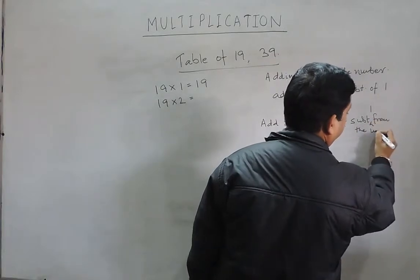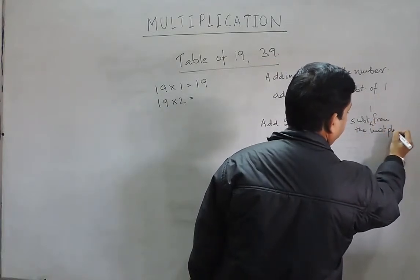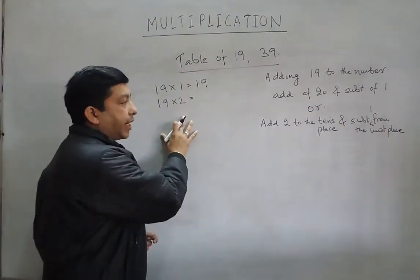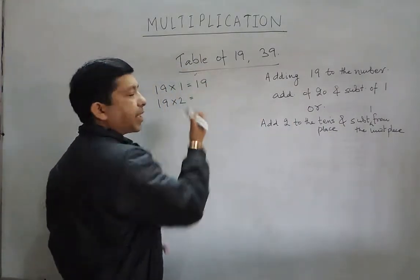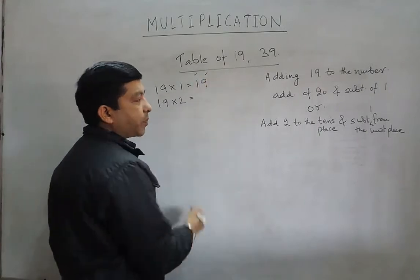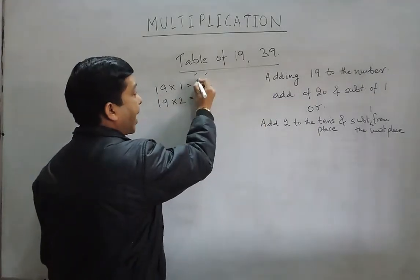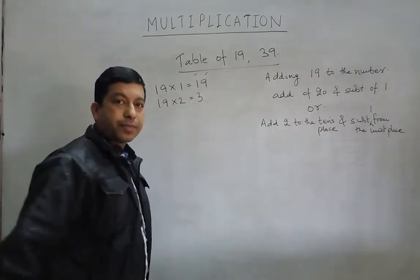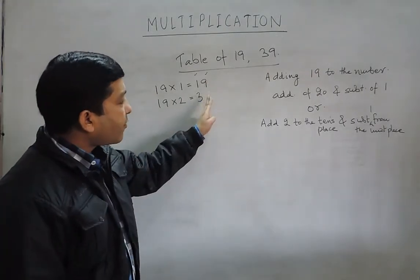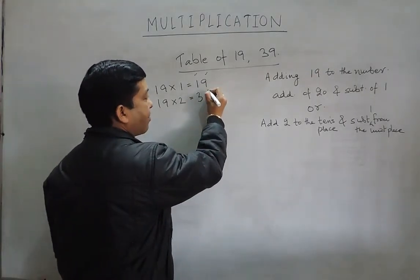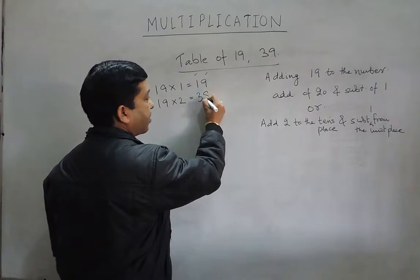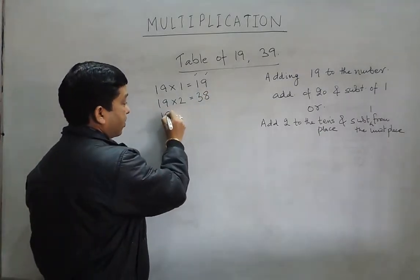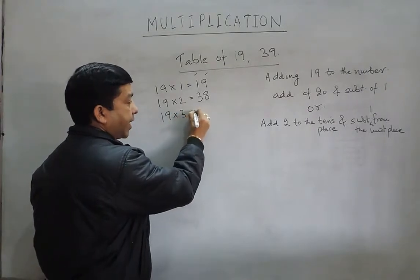Now when I write the table of 19: this is known as the tens place and this is known as the units place. For 19 into 2: adding 20 means adding 2 to the tens place, so 1 plus 2 becomes 3, and subtracting 1 from the units place: 9 minus 1 becomes 8. So 19 into 2 becomes 38.